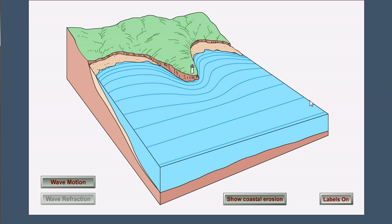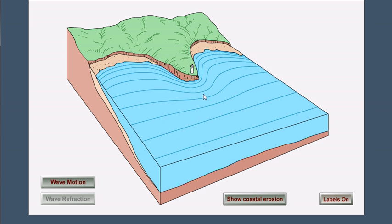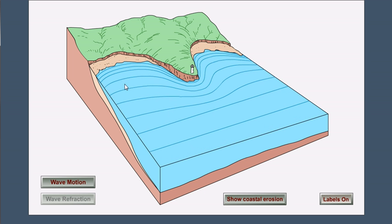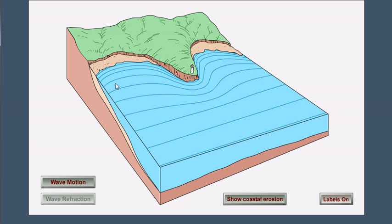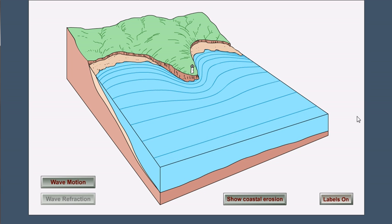For example, in this animation you can see the waves in deep water are approaching straight, but they're going to slow down in the shallow water near the headland here, but still go fast in the deep water in the bays on both sides, and that causes the waves to bend and wrap and conform somewhat to the shoreline. That's what refraction is.